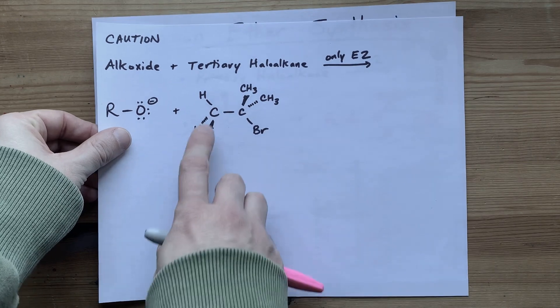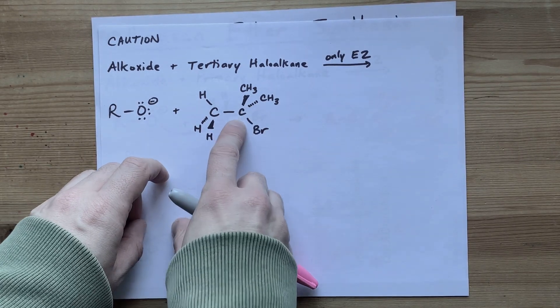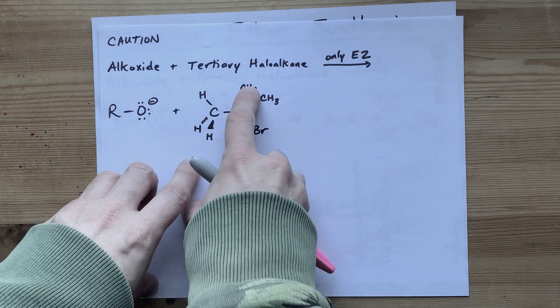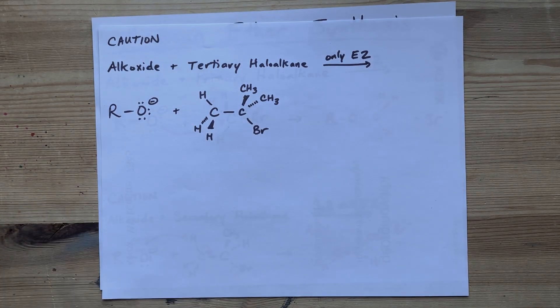And in fact, if that bromide was tertiary, as in the carbon with the bromine is connected to three other carbons, see one, two, three, you're only going to get the E2 reaction.